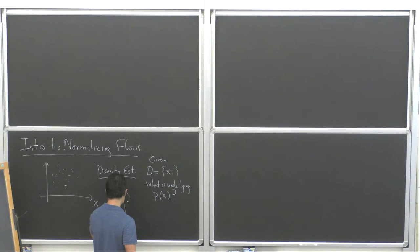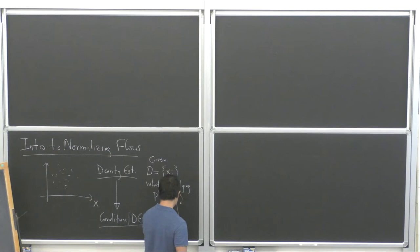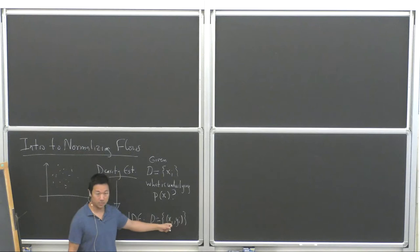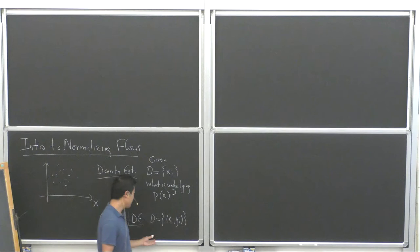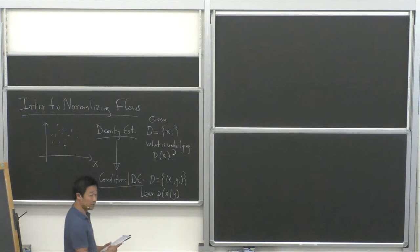A close relative of this is conditional density estimation, where the data might come in pairs — data and labels, let's say. And then you want to learn P of X conditioned on Y. That's another thing that normalizing flows enable us to do in high dimensions and without binning.